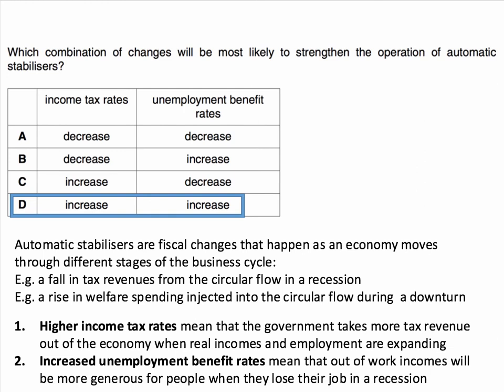Equally, if the government is spending more on welfare and unemployment benefits, that means people's out-of-work incomes — unemployment assistance, for example — will be more generous. The government will be spending more on unemployment benefits, so if people lose their jobs, it will be acting to replace a greater percentage of the lost income in a recession. Higher unemployment benefits will help to stabilise demand during a downturn in the economy.